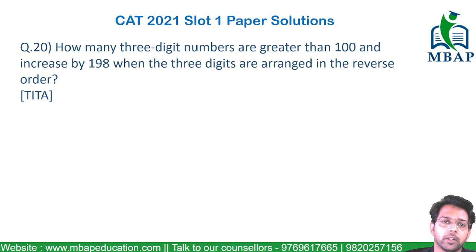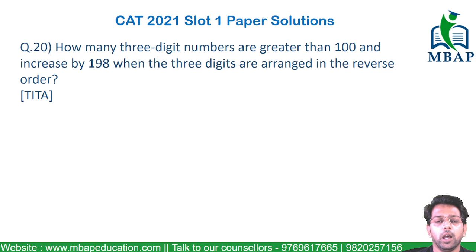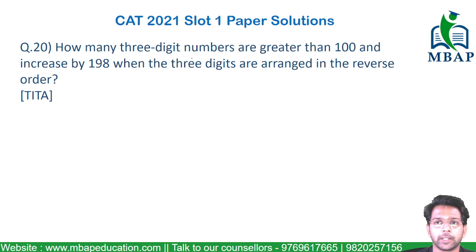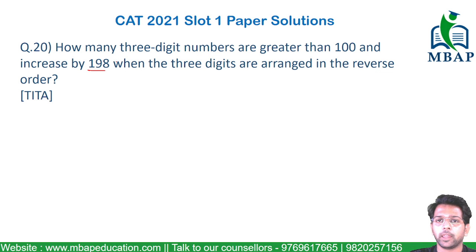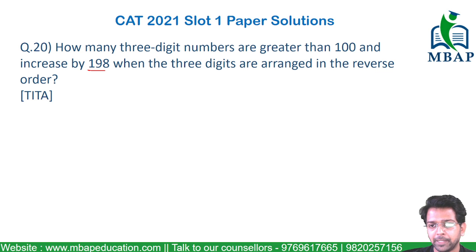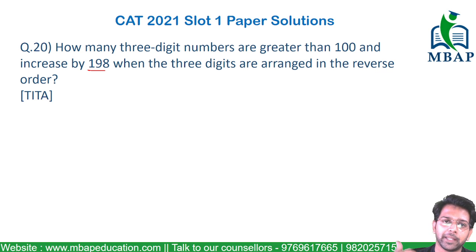The question asks: how many three-digit numbers are greater than 100 and increase by 198 when the three digits are reversed? So if you have a number ABC, the difference of CBA minus ABC should be equal to 198.